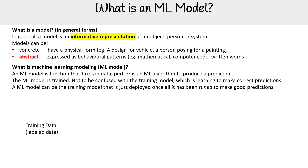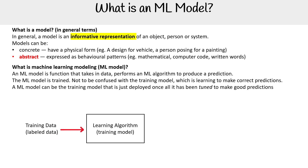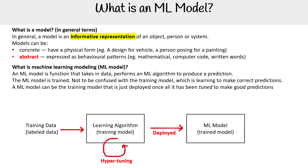Normally, you'd have training data — let's say labeled data. You're going to have your learning algorithm and put it through training. That's your training model. Then you have hypertuning, where you are continuously tweaking the model to get it to where you want it to be. Once you deploy the model, that is your trained model — your machine learning model — which can go and produce predictions.